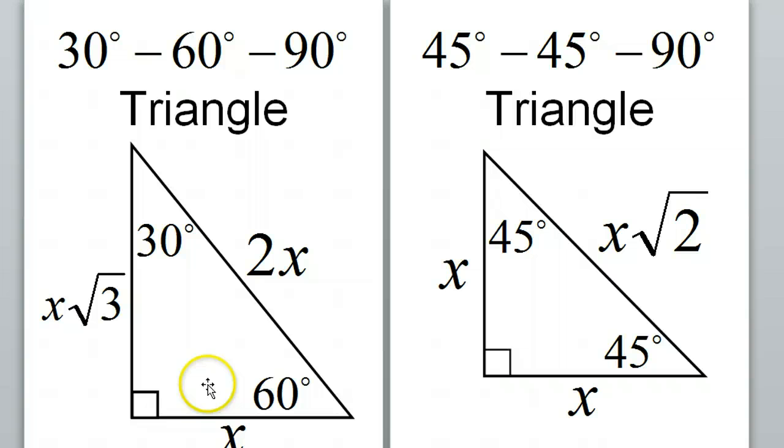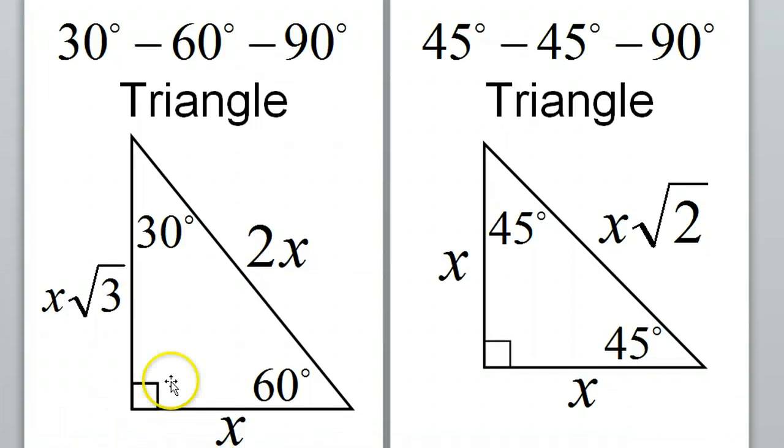When we talk about our special right triangles, we're talking about 30-60-90 right triangles and 45-45-90 right triangles. Let me move this down just a tad. This is the pattern that you have to memorize. For a 30-60-90 triangle, it goes: the legs are x, x radical 3, and the hypotenuse is 2x.